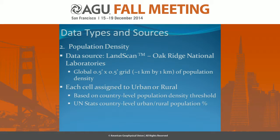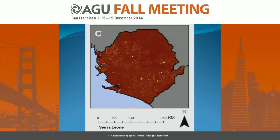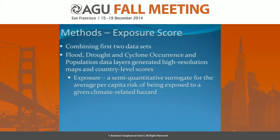For population density, we used LandScan, which is about a one-kilometer-by-one-kilometer global grid — a great dataset. We used that to assign each cell to be either urban or rural, which we needed for our drinking water access dataset. Here's what Sierra Leone looks like on the LandScan data — super high resolution. Combining the first two datasets to get our exposure score, we used the flood, drought, cyclone occurrence and the population data layers from LandScan. That gave us an exposure score — a semi-quantitative surrogate using deciles for the average per capita risk of being exposed to a given climate hazard in a given location.